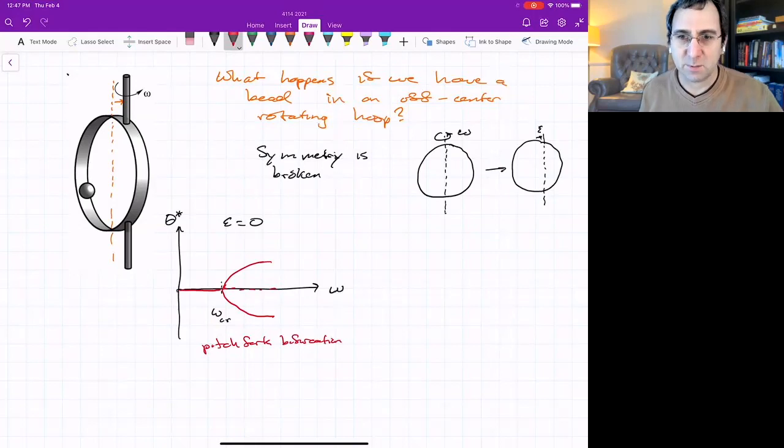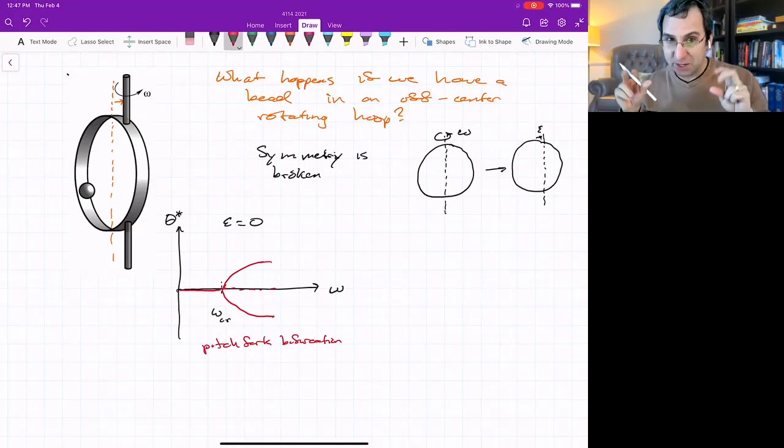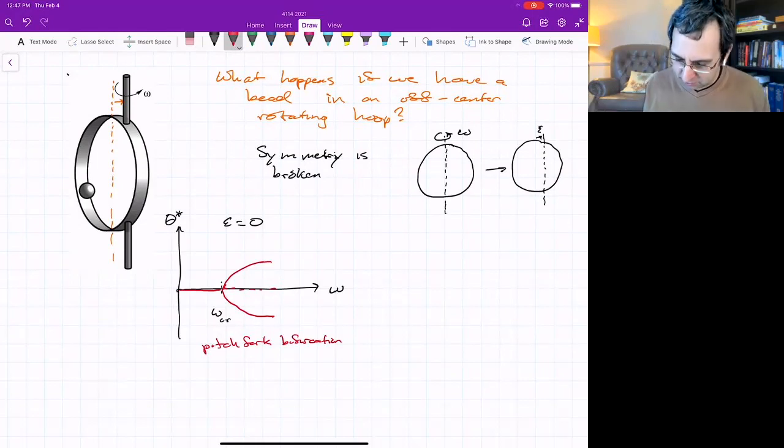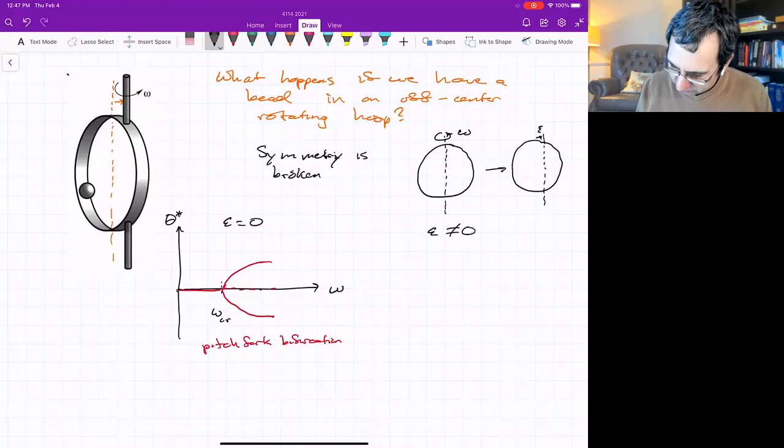But as we've discussed before, this is a fragile situation because it requires epsilon equals zero. So any small imperfection—we could refer to epsilon as an imperfection parameter or a symmetry breaking parameter—if we just say epsilon not equal to zero, you could be offset to the right or to the left, and then something will happen here.